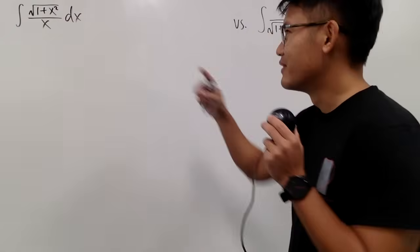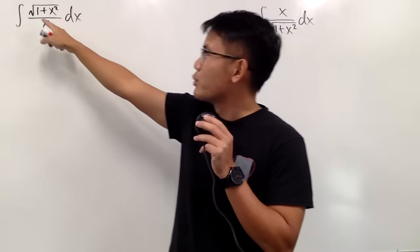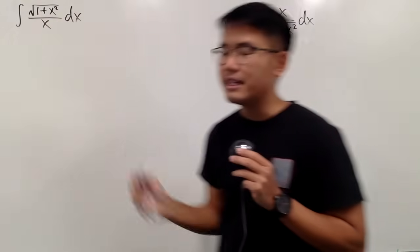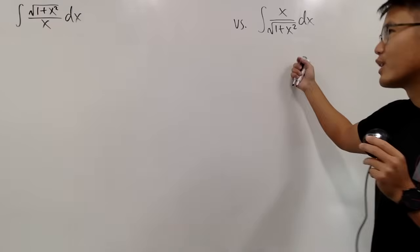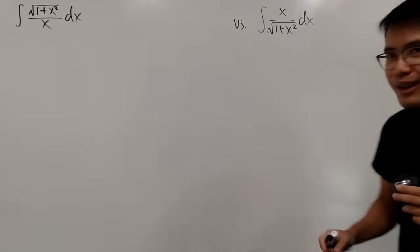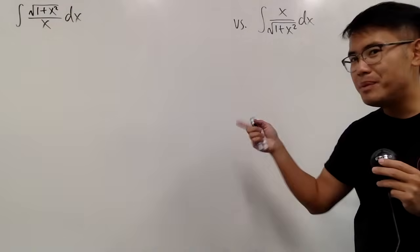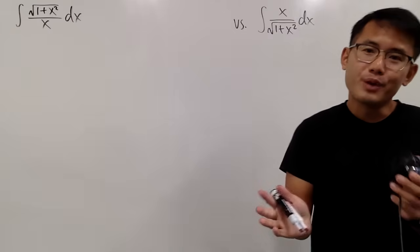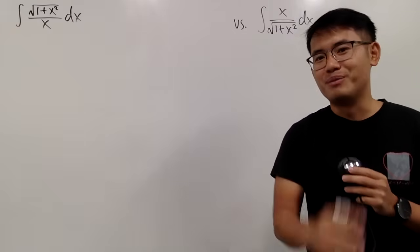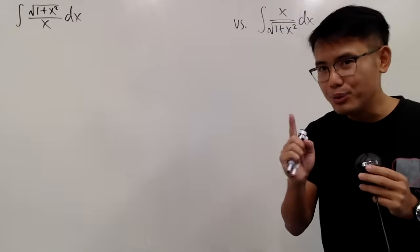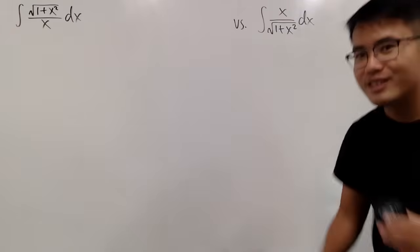Okay, two integrals on the spot. The first one is the integral of square root of 1 plus x squared over x. And for the second one, it's just a reciprocal. So maybe one of them is easier than the other? Please pause the video and do the easier one first.